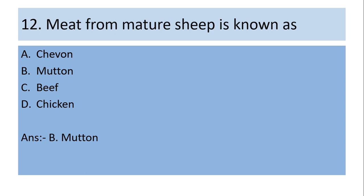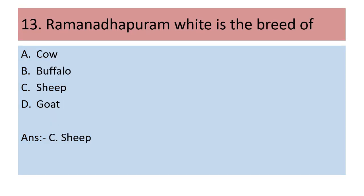Twelfth question: Meat from mature sheep is known as — (a) chevon, (b) mutton, (c) beef, (d) chicken. Answer is (b) mutton. Thirteenth question: Ramanathapuram white is the breed of — (a) cow, (b) buffalo, (c) sheep, (d) goat. Answer is (c) sheep.